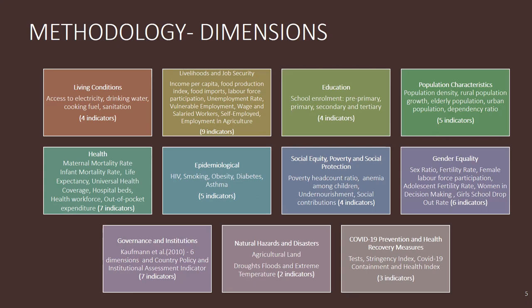For epidemiological characteristics — very important for a population — we look at the percentage of the population having diabetes, suffering from asthma, smoking, or having HIV. Within social equity, poverty and social protection, we use indicators like poverty headcount ratio, undernourishment, and anemia among children. Gender equality is another dimension considered very important for the African region; six indicators were used including women in decision-making, girls' school dropout ratio, female labor participation rate, fertility rates, and sex ratio.